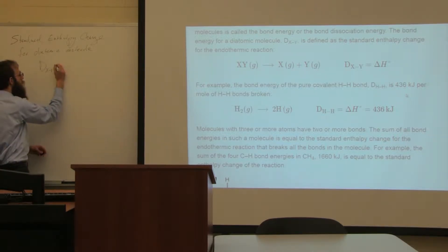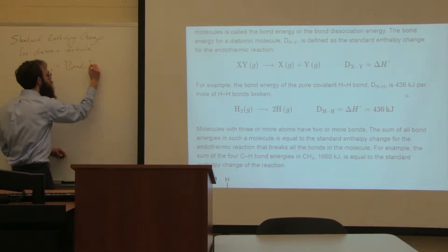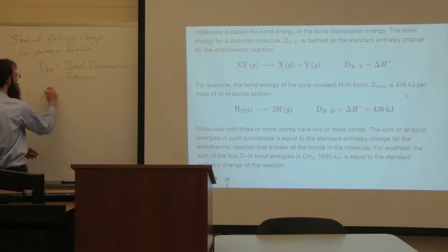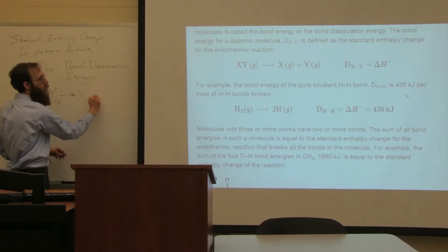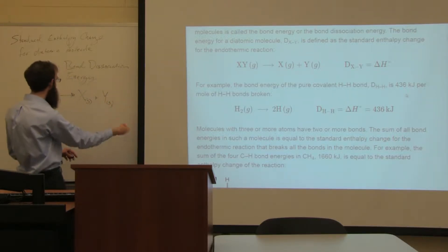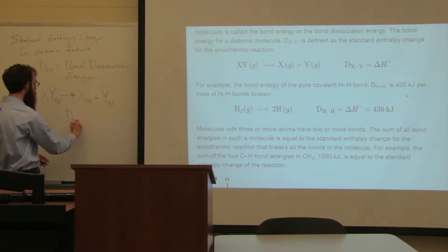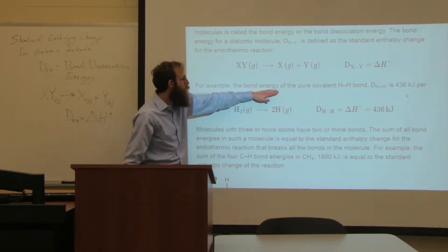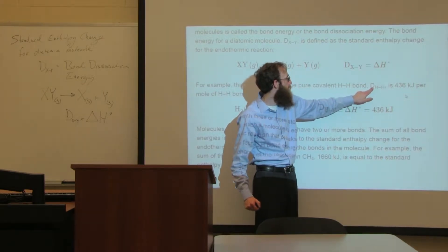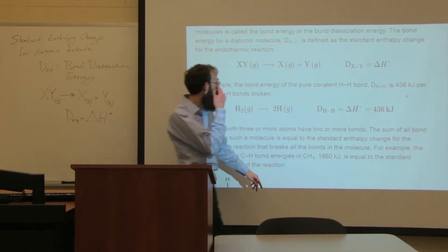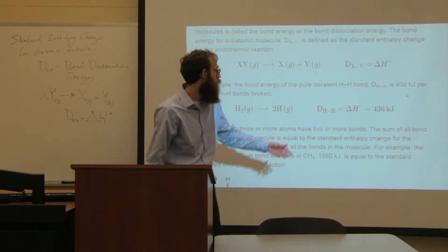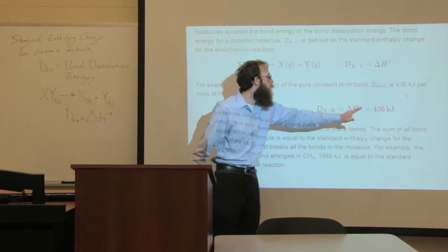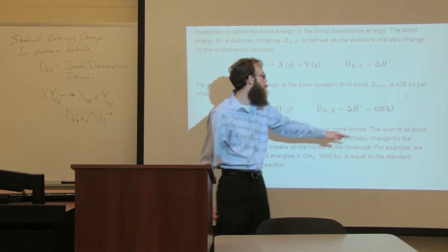The bond dissociation energy D(XY) equals ΔH° for the reaction XY(g) → X(g) + Y(g). For example, the bond energy for a hydrogen molecule D(HH) is 436 kilojoules per mole of bonds broken. So if we have one mole, it's going to require 436 kilojoules to break that bond. If we have two moles, it will require twice that amount; if we have 0.5 moles, it would require half that amount.